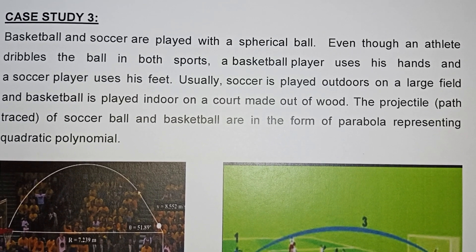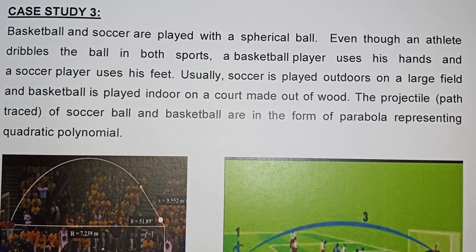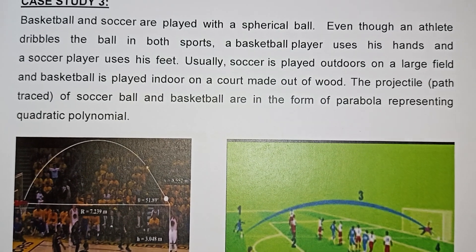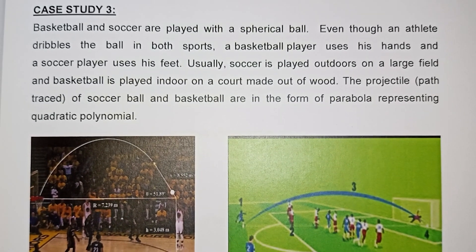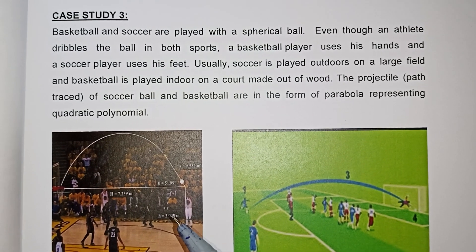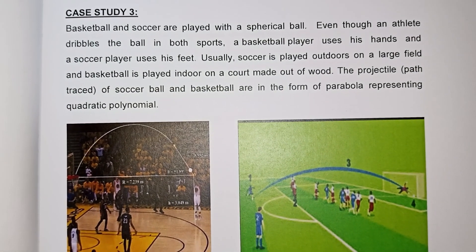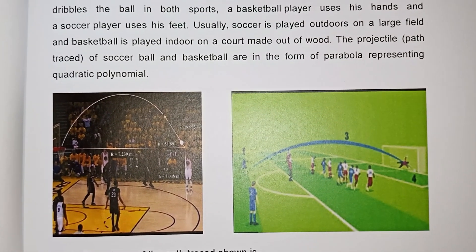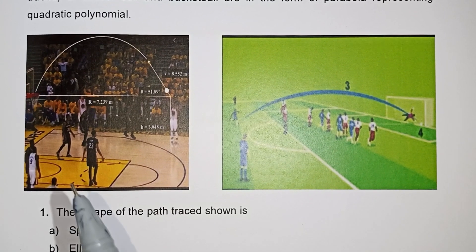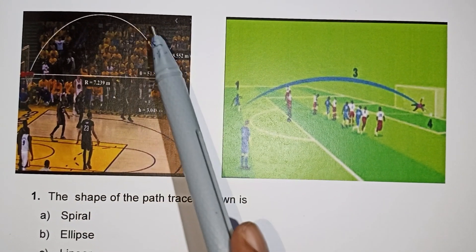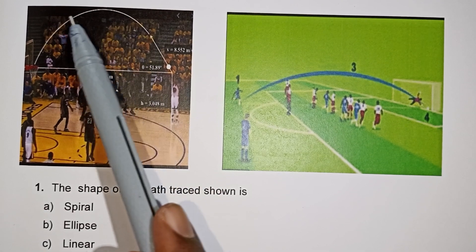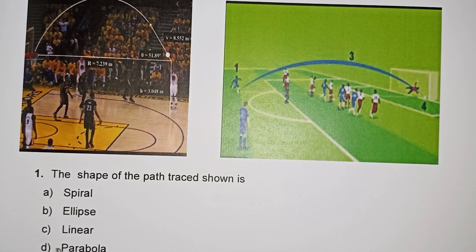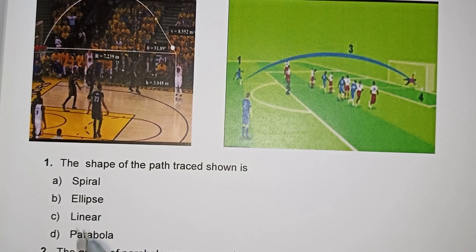A polynomial example is basically a basketball or a saucer ball — a spherical shape. If you look at the ball and its path, you can see the shape of the curve. This is a U-shaped curve, and this is a parabola. The D option is a parabola.